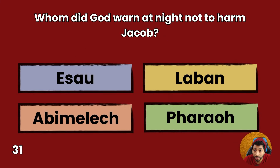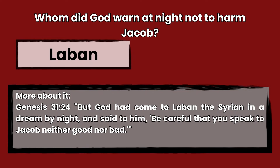Question 31: Whom did God warn at night not to harm Jacob? Esau, Laban, Abimelech, or Pharaoh? Answer: Laban. Genesis 31:24 — But God had come to Laban the Syrian in a dream by night, and said to him, Be careful that you speak to Jacob neither good nor bad.